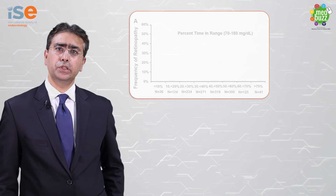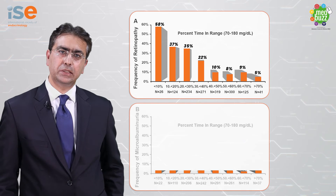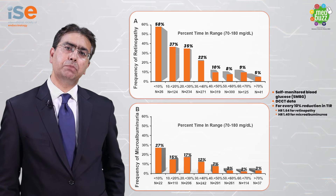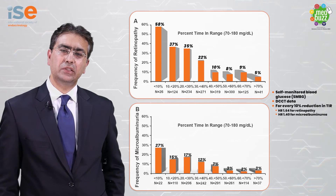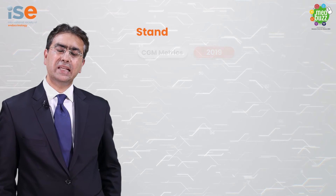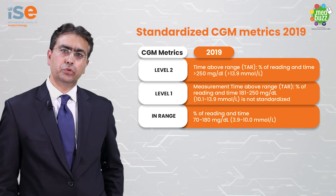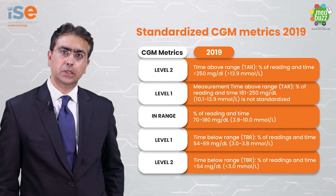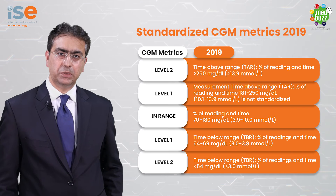So what are the target ranges? In-target range refers to the time spent between 70 to 180 mg per deciliter or 3.9 to 10 mmol per liter. Time below range refers to the percentage of time the readings are less than 69 mg per deciliter, and is divided into level 1 where readings are between 54 to 69 mg per deciliter or 3 to 3.8 mmol per liter, and level 2 where readings are less than 54 mg per deciliter or less than 3 mmol per liter.